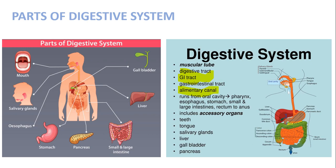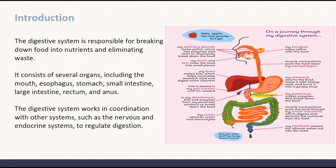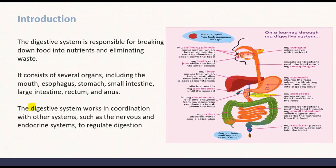digestive tract, and alimentary canal, which runs from the oral cavity, pharynx, esophagus, stomach, small intestine, large intestine, and to the anus. The accessory glands in the digestive system are the teeth, tongue, salivary glands, liver, gallbladder, and pancreas. The digestive system works in coordination with other systems such as the nervous and endocrine system to regulate digestion.